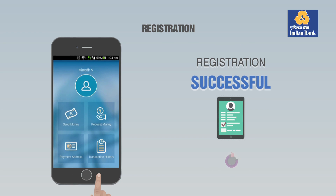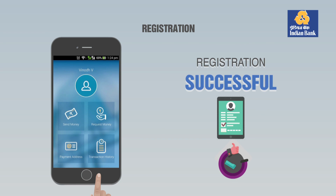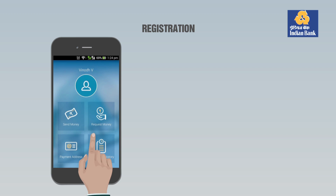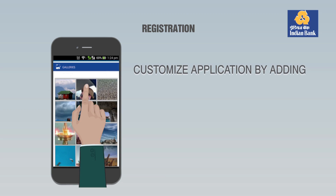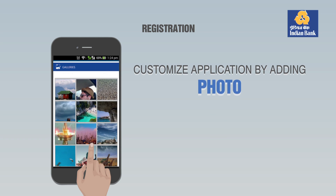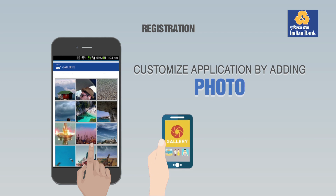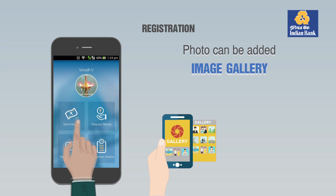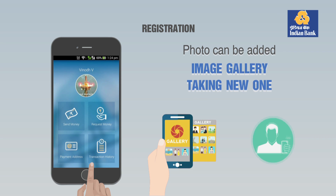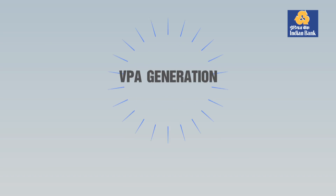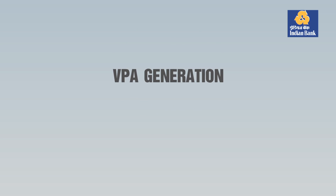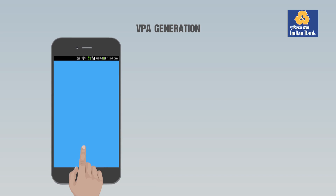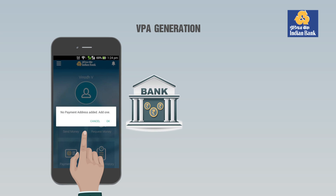Step 5: Set an application password and confirm the application password. You are now successfully registered with the bank. You can customize your application by adding a photo for display — the photo can be added from an existing image gallery or by taking a new one. Now link your bank account by creating a Virtual Payment Address (VPA).